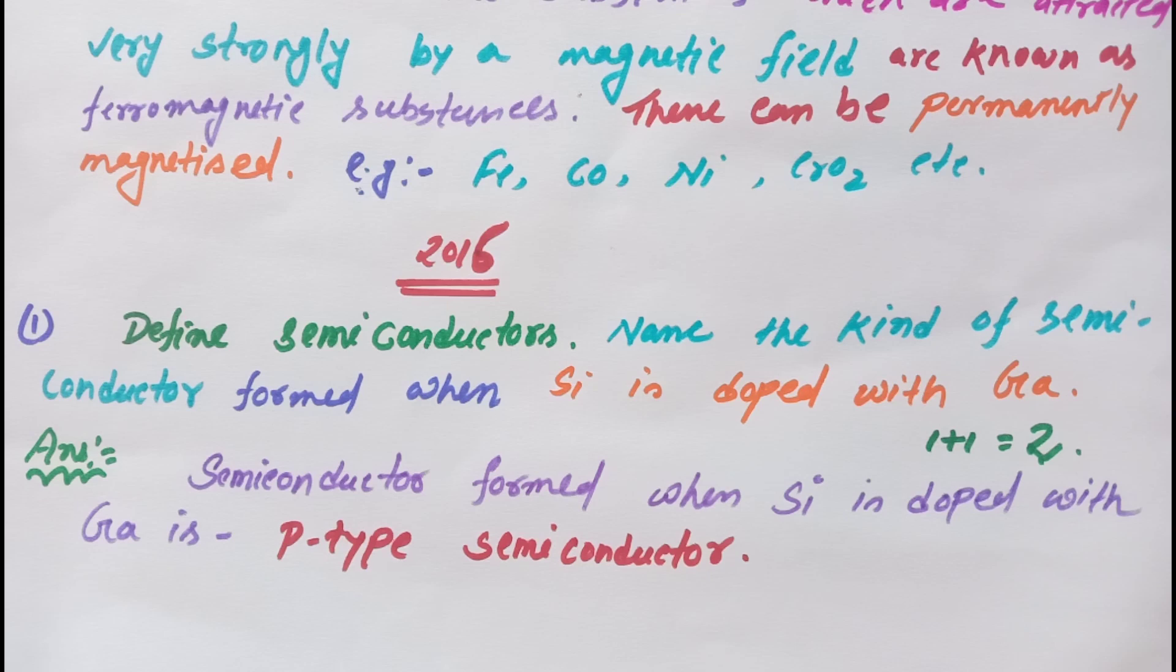The semiconductor formed when silicon is doped with gallium is P-type semiconductor. Why? Because silicon is a Group 14 element and gallium is a Group 13 element. So when silicon is doped with Group 13 element, then we get P-type semiconductor.